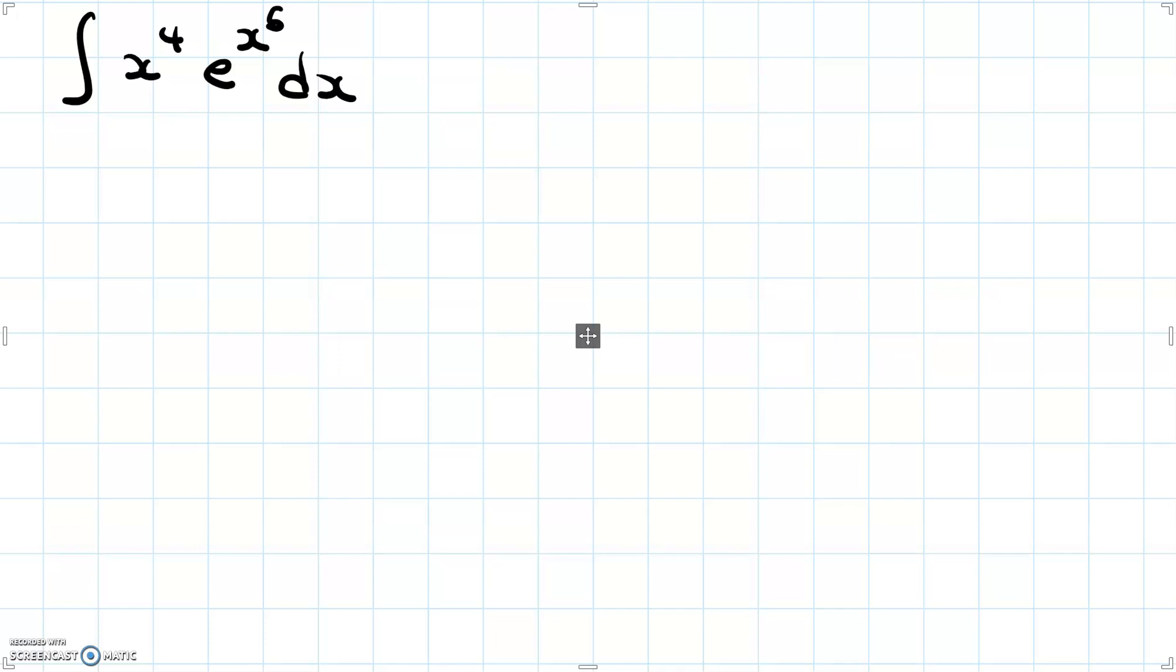So what we want to do here is we want to make a u substitution. And what we're going to want to make a u substitution for is for x to the fifth power. Because if we do this, we can cancel out the x to the fourth power when we substitute back in for our du. And then we'll be able to simplify, solve the integral, and then substitute back in. So let's go through the steps of how we do that.